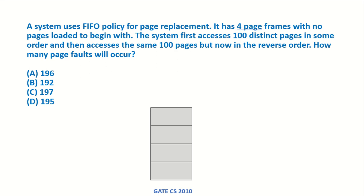A system uses FIFO policy for page replacement. It has 4 page frames with no pages loaded to begin with, meaning initially the memory is vacant and empty. The system first accesses 100 distinct pages in some order and then accesses the same 100 pages in the reverse order. How many page faults will occur?